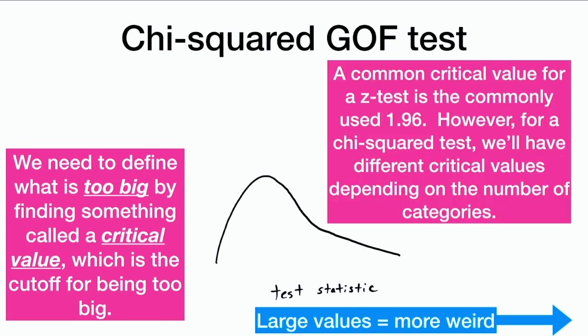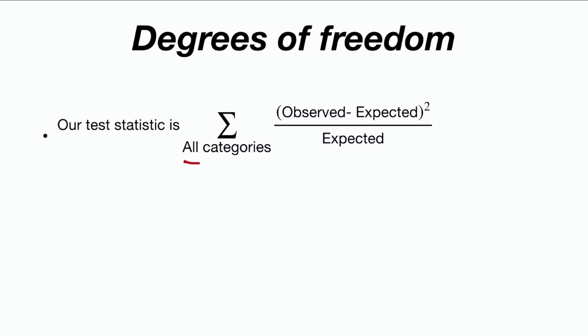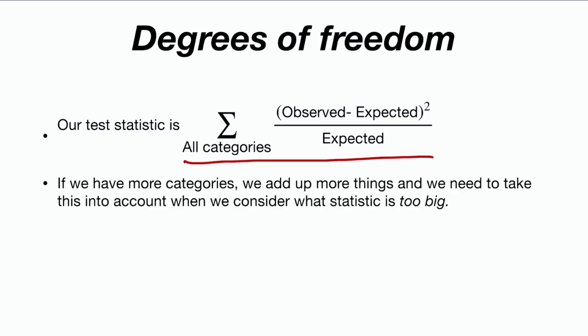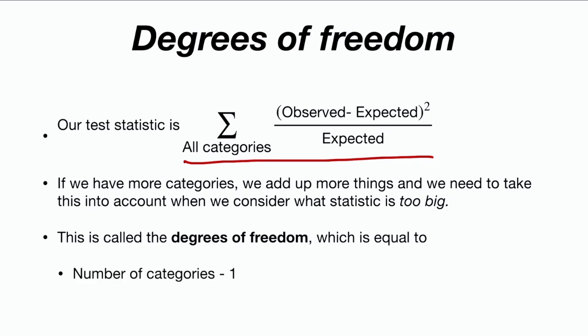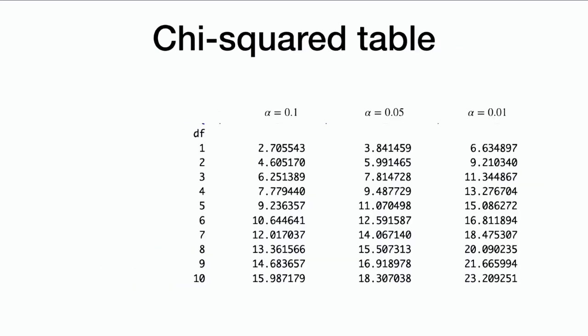A common critical value for a z-test is 1.96. However, for a chi-squared test we'll have different critical values depending on the number of categories, which leads us to something called degrees of freedom. Our test statistic is summed over all categories, so if we have more categories, we're adding more things up and need to take that into account. Degrees of freedom equals the number of categories minus 1. Here we had a die with six categories, so 6 minus 1 equals 5 — we have 5 degrees of freedom.